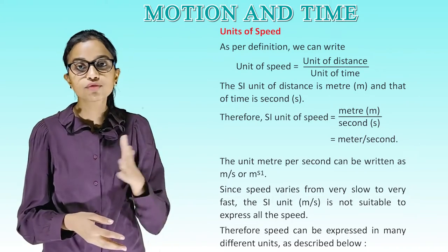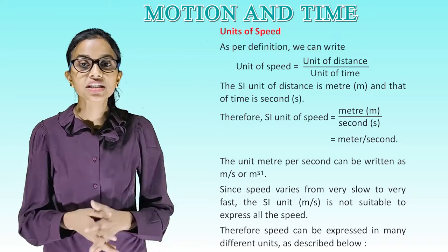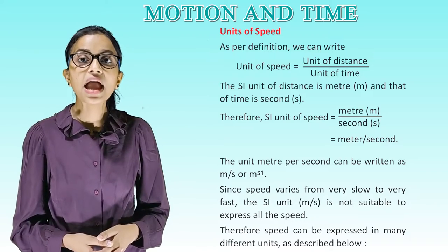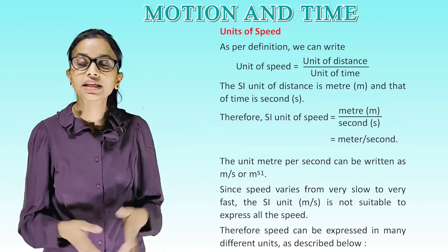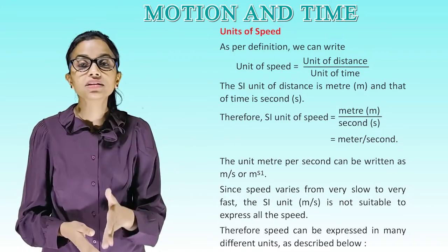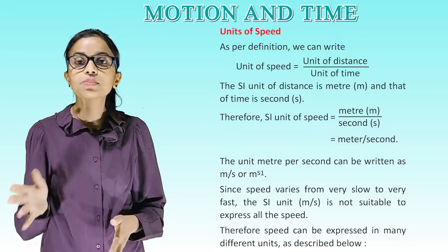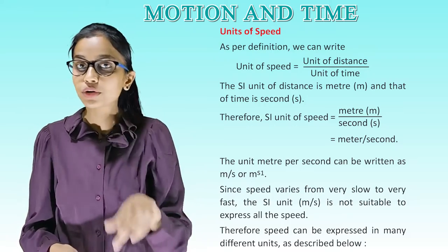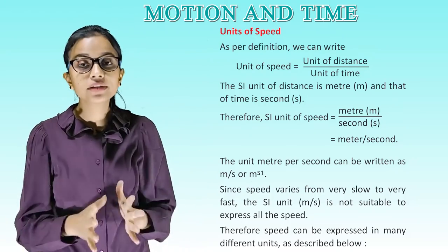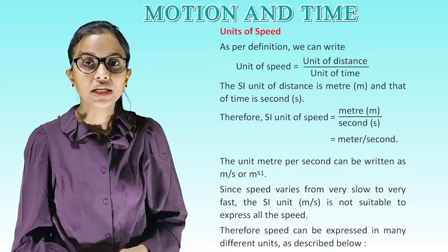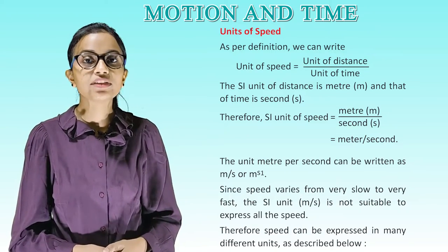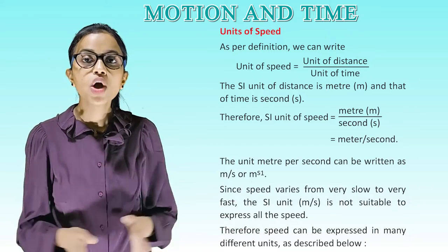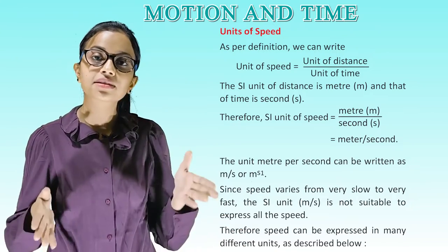Units of speed. As per definition, we can write unit of speed equals unit of distance divided by unit of time. The SI unit of distance is meter M and that of time is second S. Therefore, SI unit of speed equals meter divided by seconds, that is meter per second. The unit meter per second can be written as meter per second or meter raised to the power S to the power 1. Since speed varies from very slow to very fast, the SI unit meter per second is not suitable to express all the speeds. Therefore, speed can be expressed in many different units as described below.